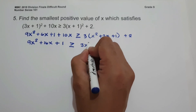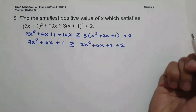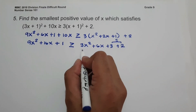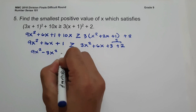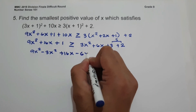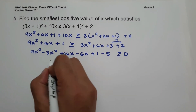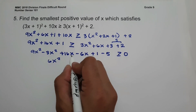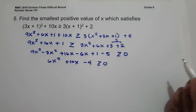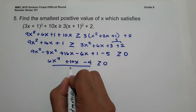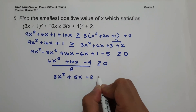Moving everything to the left: 9X² − 3X² + 16X − 6X + 1 − 5 ≥ 0, giving 6X² + 10X − 4 ≥ 0. Dividing the whole inequality by 2: 3X² + 5X − 2 ≥ 0.